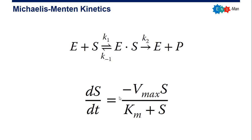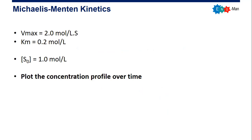This is the rate of consumption of the substrate, which can be predicted using the Michaelis-Menten equation. Our case is: Vmax is 2 mol/L/s, Km is 0.2 mol/L, and the initial concentration S₀ is 1 mol/L. We need to construct the concentration profile of the substrate over time using Python.